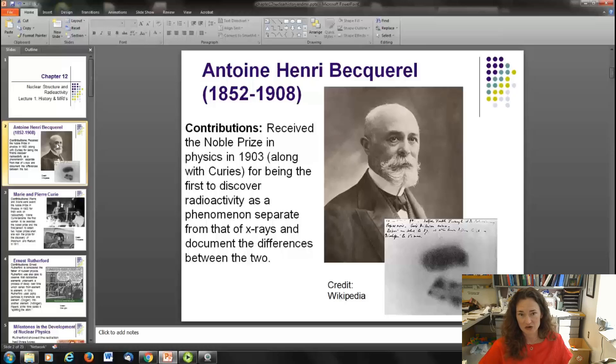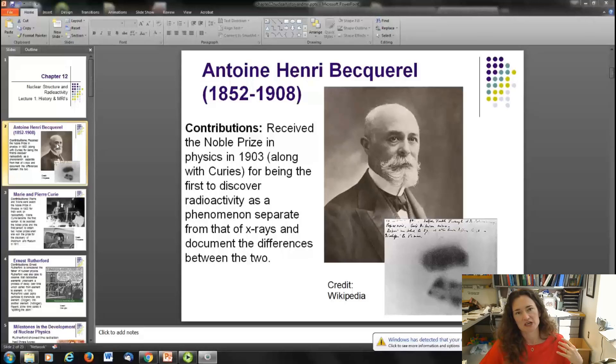Henry Becquerel lived from 1852 to 1908. He, along with the Curies, received the Nobel Prize in Physics in 1903 for being the first to discover radioactivity as a phenomenon that was separate from that of x-rays, and then to document the differences between the two. He was from a rich family that produced about four generations of scientists. He was the physics chair at the National Natural History Museum and was also the chief engineer of highways and roads. His PhD work and early research studied phosphorescence of materials and light.